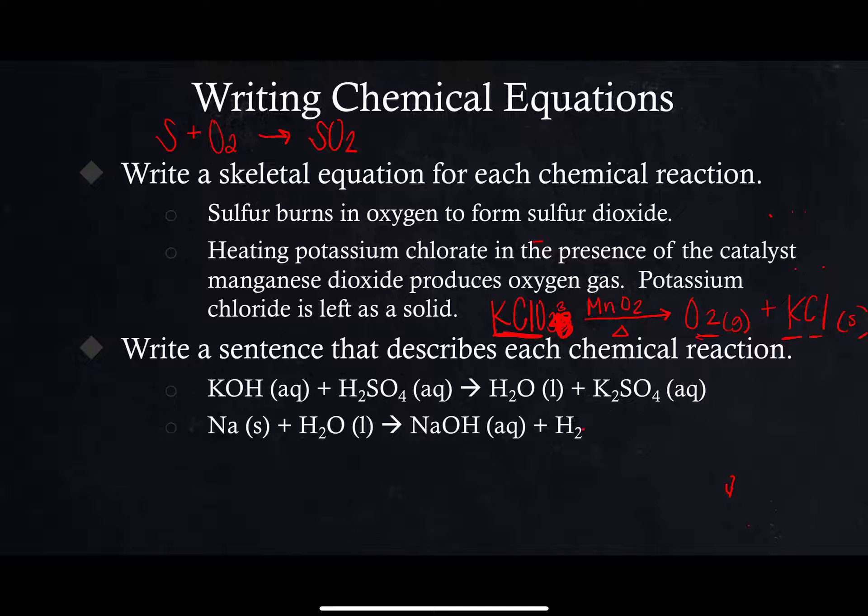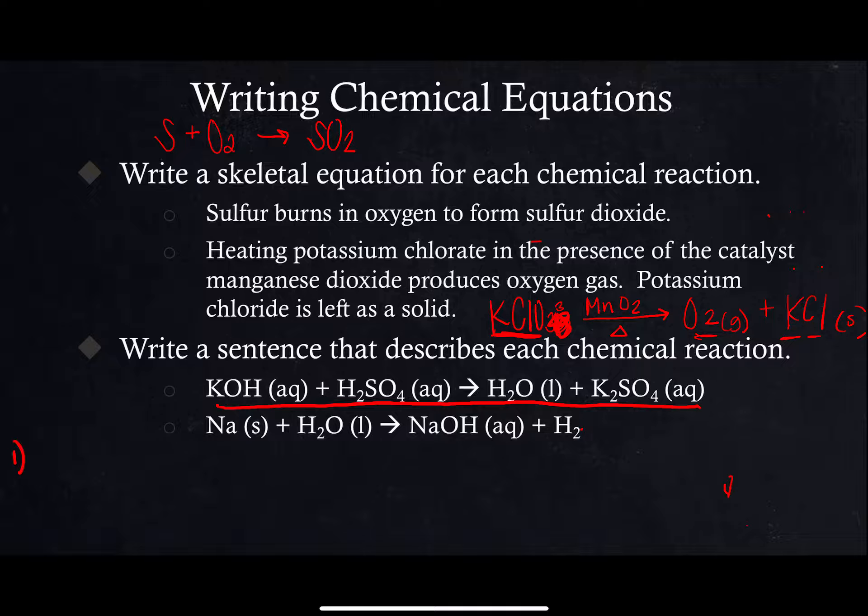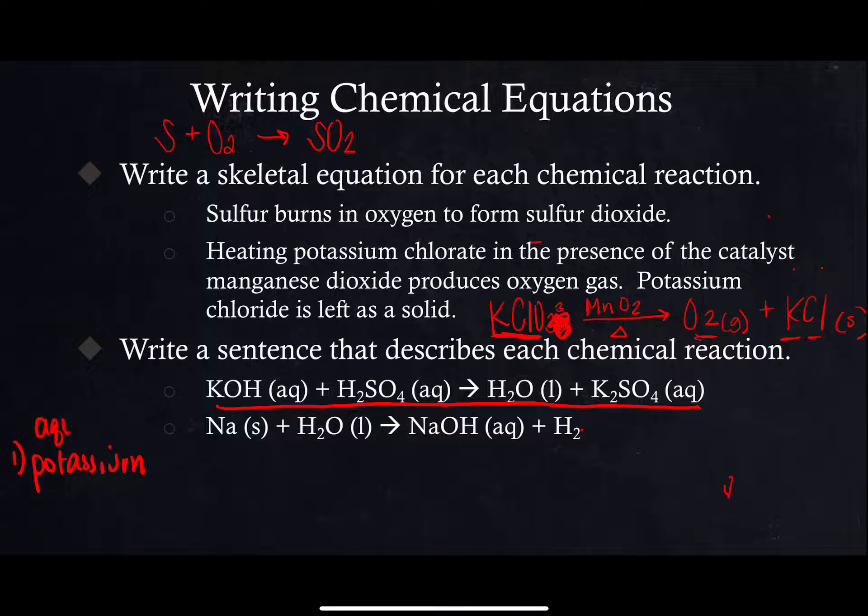Now for these it asks us to write a sentence, so I'm going to ask you to be able to do both of these. For this one, the first one, we would say aqueous potassium hydroxide combines with aqueous sulfuric acid to form liquid water and aqueous potassium sulfate.